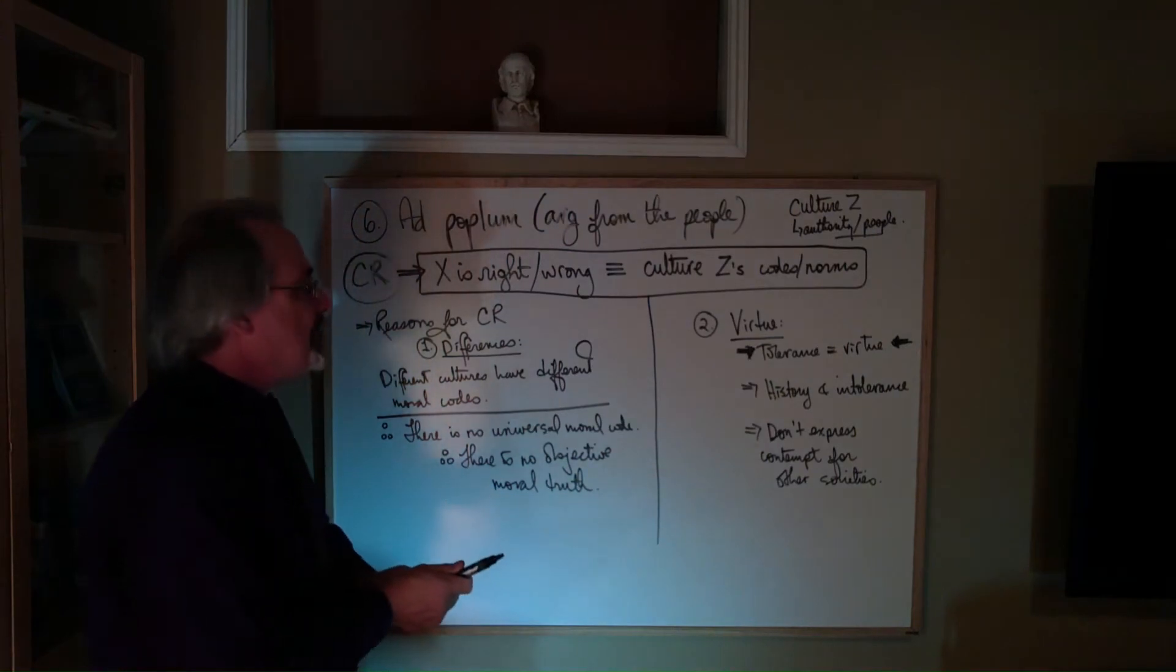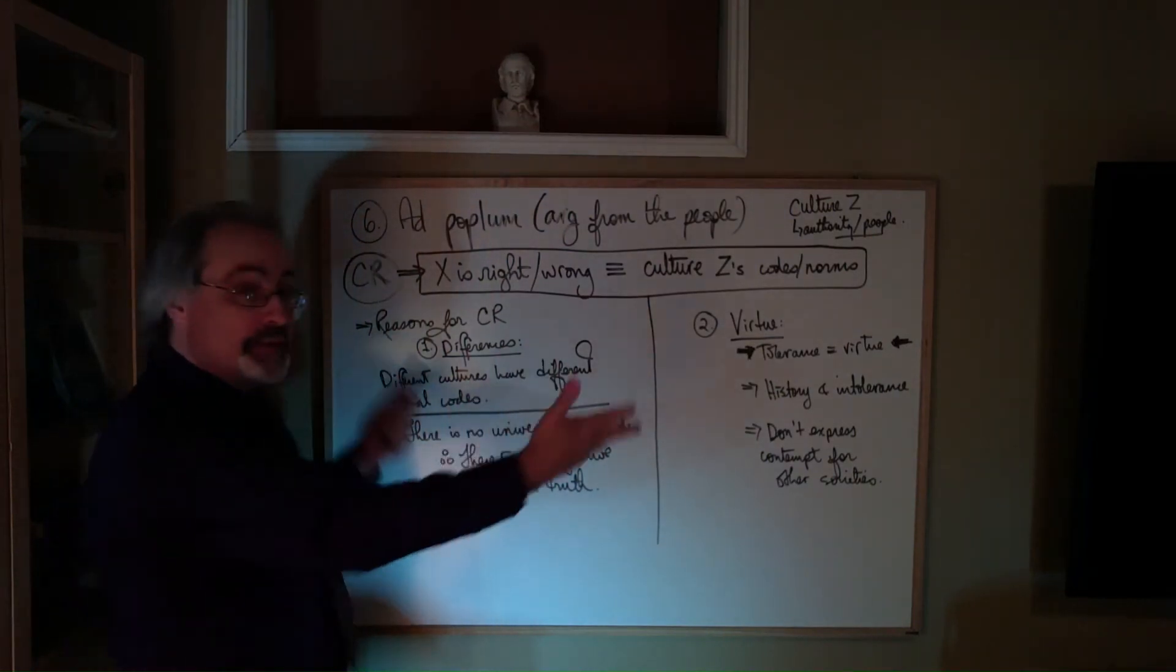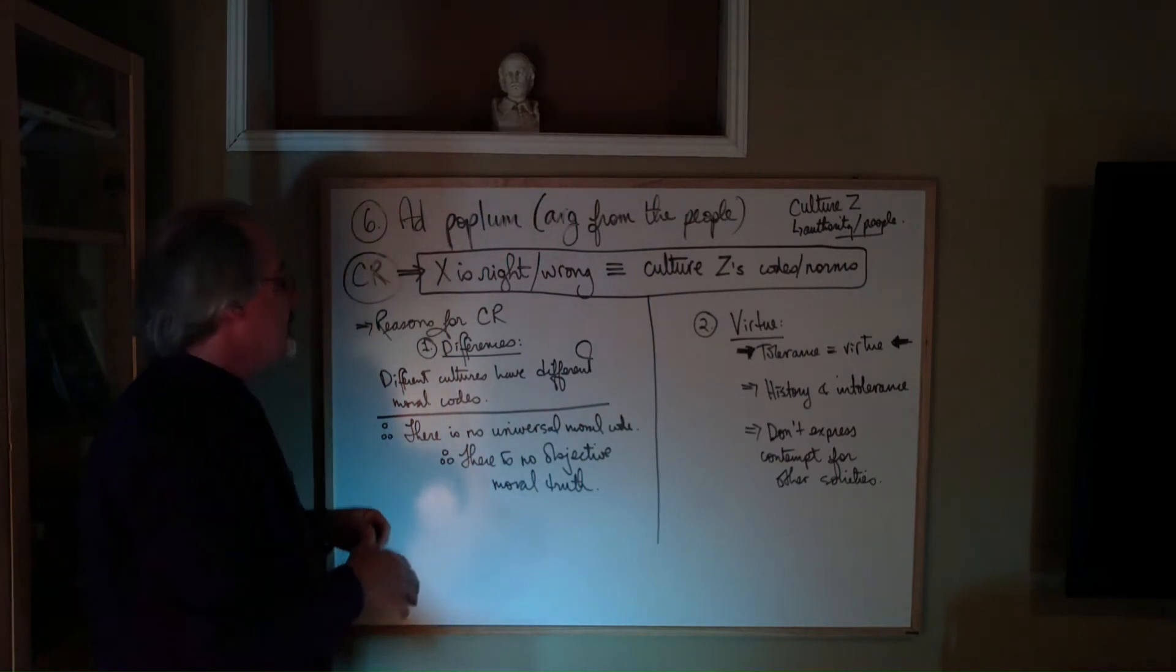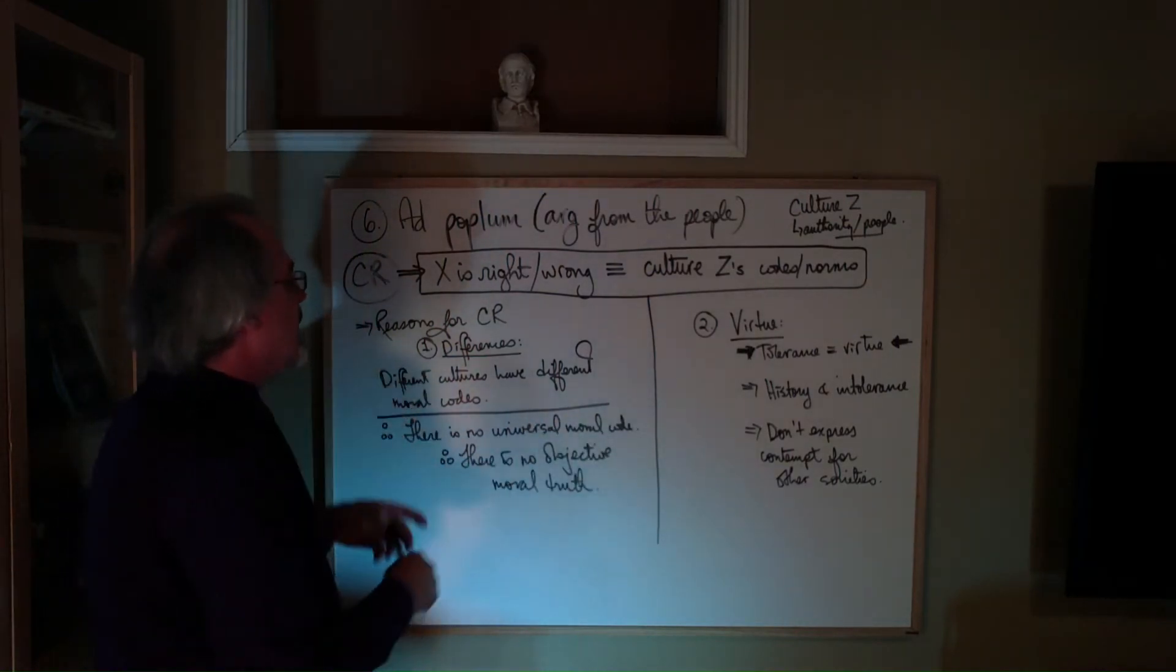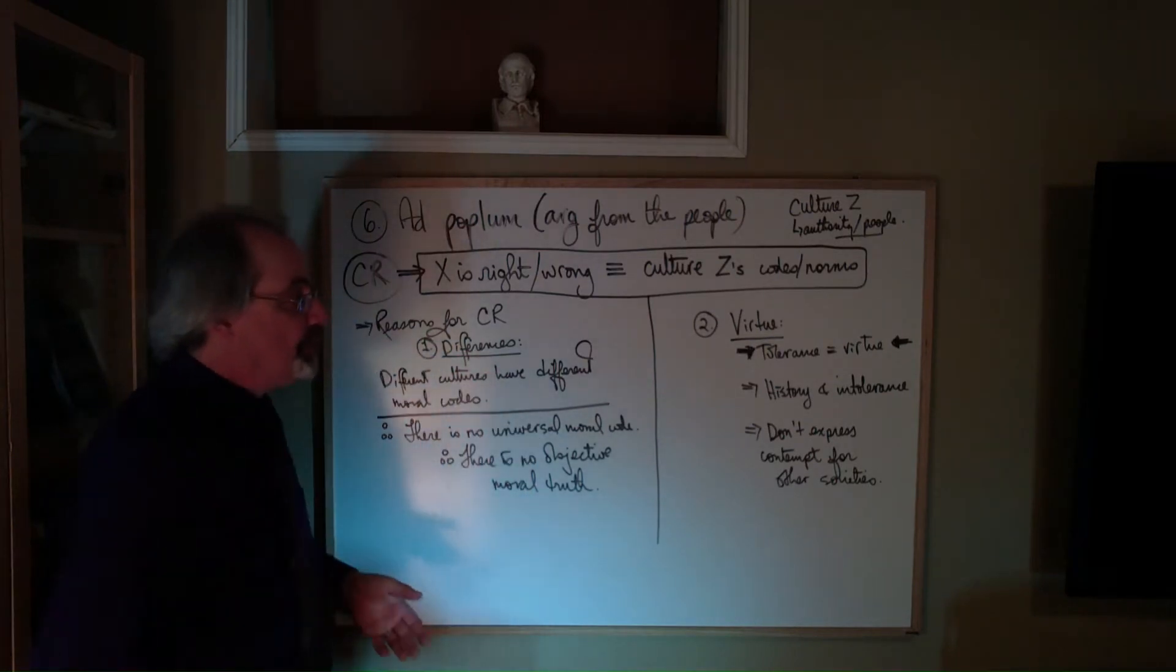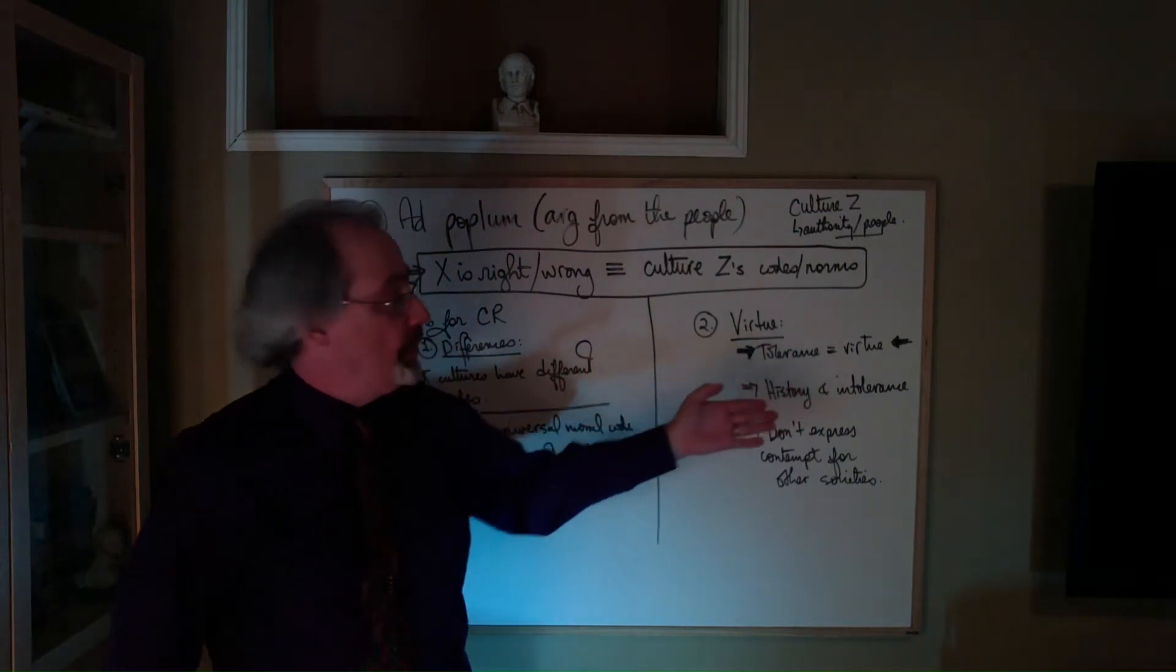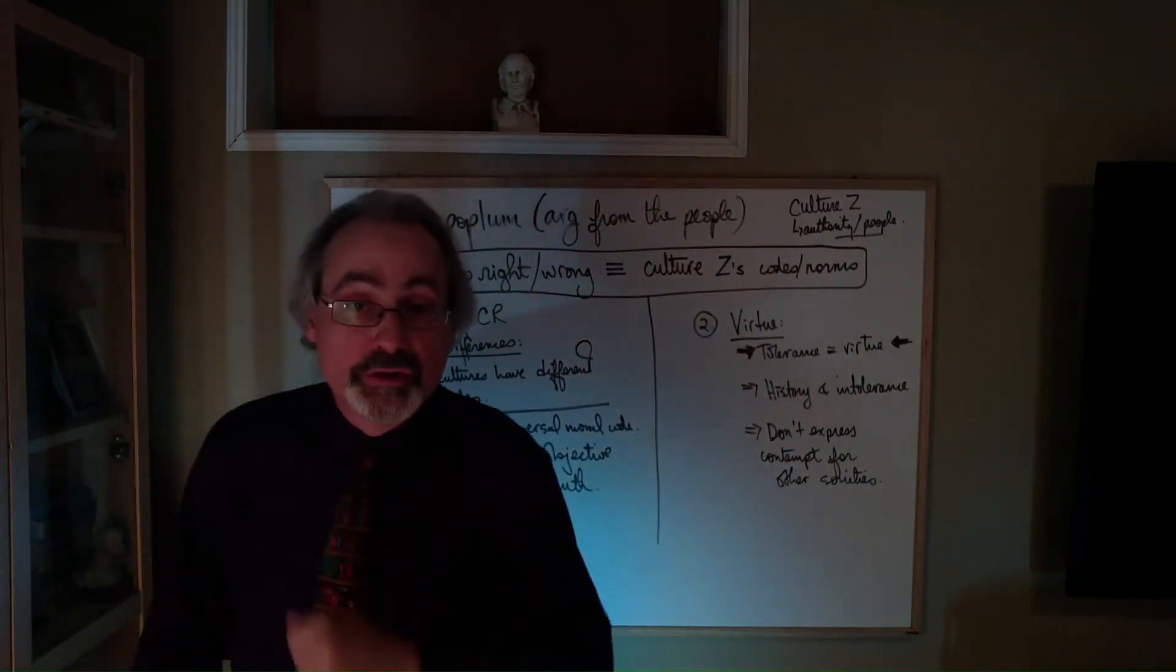So why do some people agree with this position of cultural relativism? Well, there seems to be two general categories. One is what I'm going to call the differences type of argument, and one is a concern for what Aristotle often talked about, the virtues.